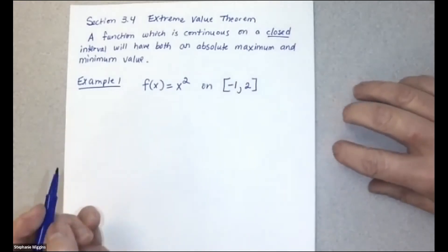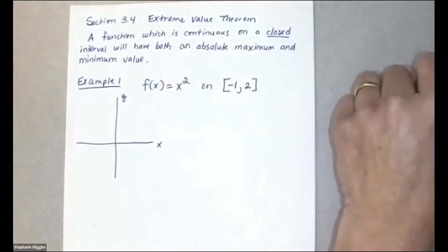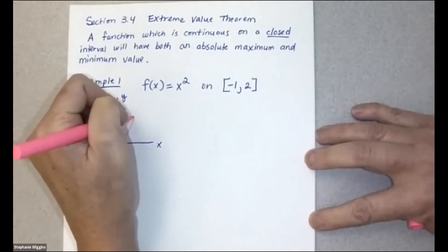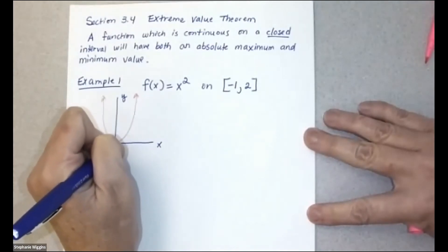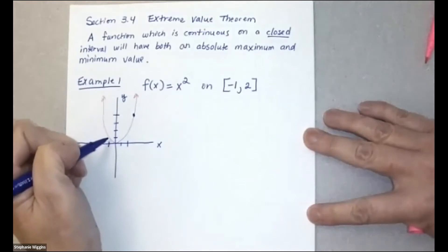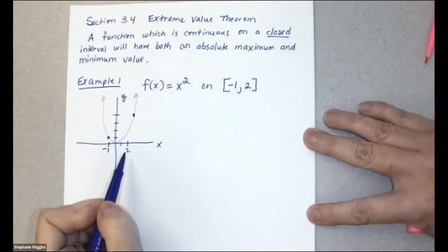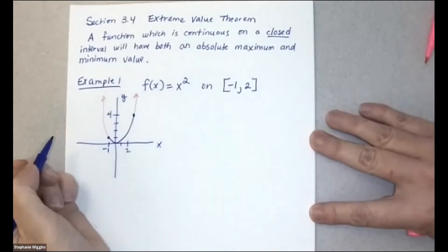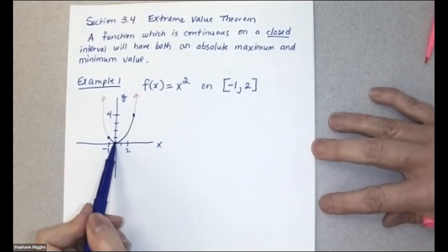This function is continuous. If I draw a sketch of the general function x squared, and then look on the closed interval from negative one to two, the x values go from negative one to two, and the y values range from zero to four. The lowest point for the y value is zero, meaning this point is the lowest for the parabola.